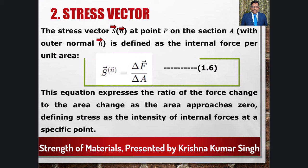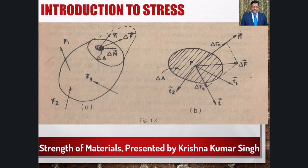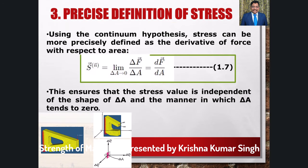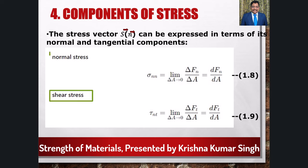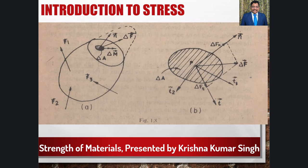हालांकि stress की ये परिभाषा पर्याप्त नहीं है क्योंकि ये केवल दिए गए point पर stress का average value देती है। Continuum hypothesis हमें stress को और अधिक precisely define करने में सक्षम बनाती है - stress vector N के respect में force के change और area के change के ratio के limit के बराबर है जब area 0 के पास पहुंचता है। हम यहां मानते हैं कि इस limit का value exist करता है और unique है और ये delta A के shape या delta A के 0 की तरफ जाने के तरीके पर निर्भर नहीं करता।